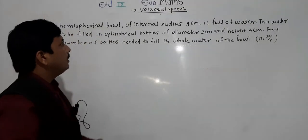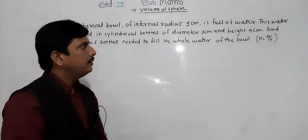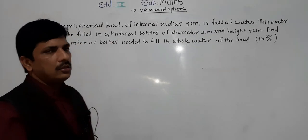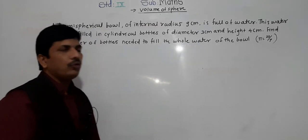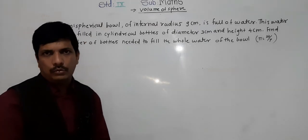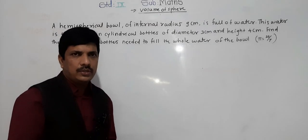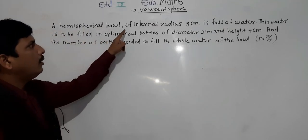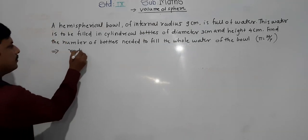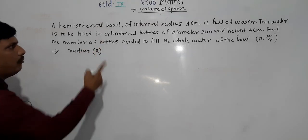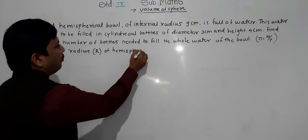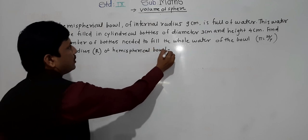Third problem: a hemispherical bowl of internal radius 9 centimeter is full of water. This water is to be filled in cylindrical bottles of diameter 3 centimeter and height 4 centimeter. Find the number of bottles needed to fill the whole water of the bowl.